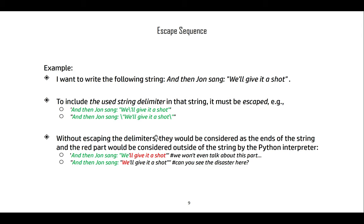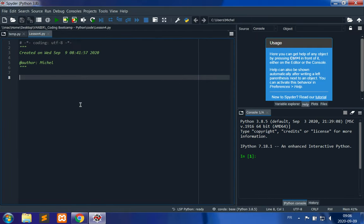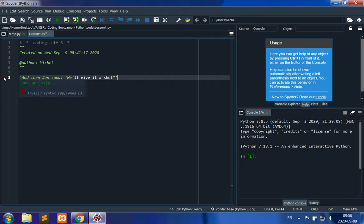So let's look at what it looks like actually in Python. If I write and then John said or sang will give it a shot. Now I try to place the quotation mark when I forgot the double quotation mark inside. Now you see that Python says that there's invalid syntax because the string actually starts here at and, and it ends right after the we. If we place the backslash to escape this single quotation mark, then the string becomes valid again.